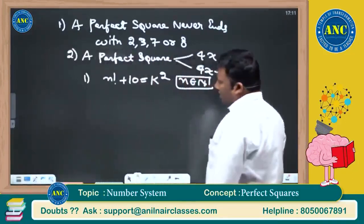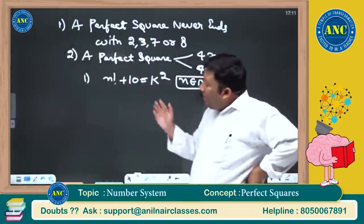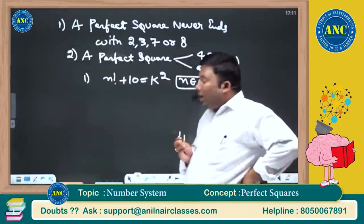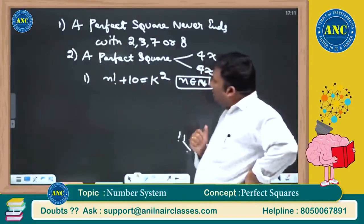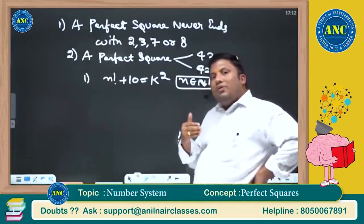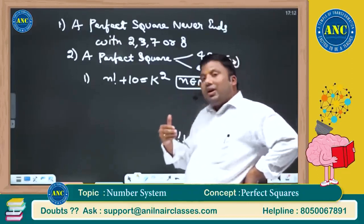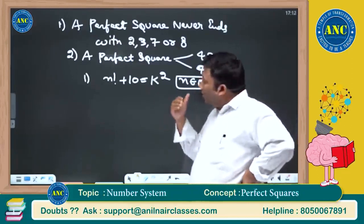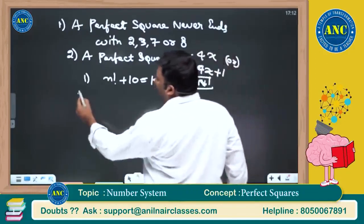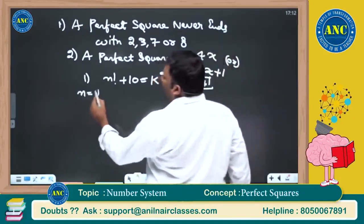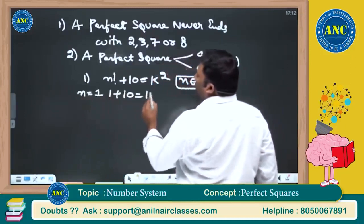On the left hand side, factorial is defined for whole numbers. Here n is given as a natural number. How many values of n will satisfy n factorial plus 10 equals k squared? Let me first take n equal to 1: 1 factorial plus 10 equals 11.